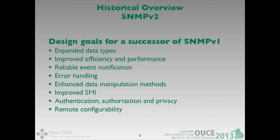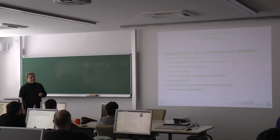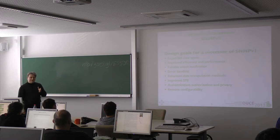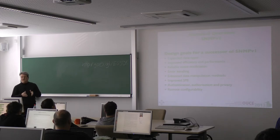Pretty soon it became obvious that SNMPv1 had some weaknesses. One was the data types: the largest integer format SNMPv1 can handle is 32 bits. When you look at an interface counter for a byte count on a 10 Mbit/s interface, it takes about 7 minutes to wrap at full load. Now we have 10 Gigabit per second interfaces. You can imagine how long it takes for a 32-bit counter to wrap — it's just not usable anymore.